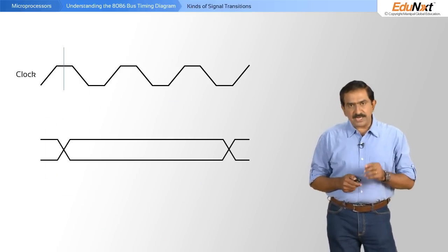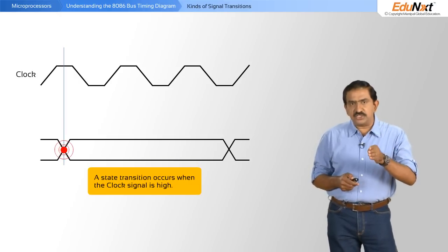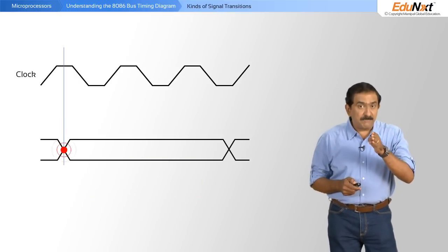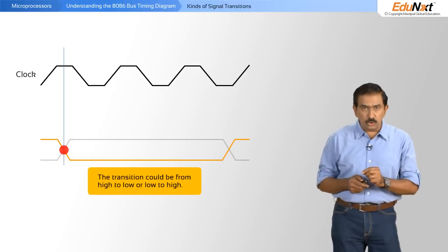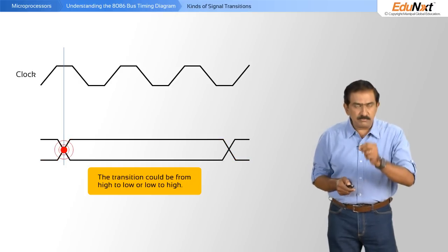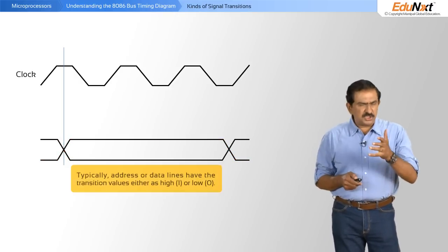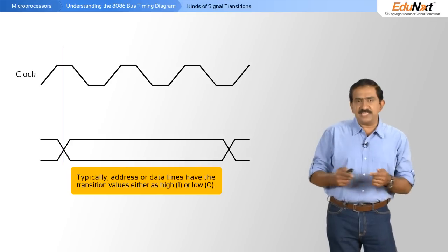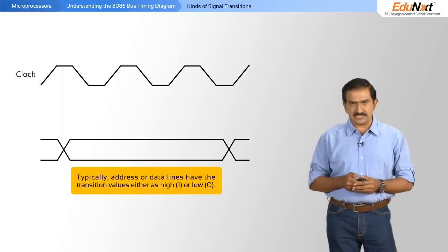In this example, a state transition occurs when the clock signal is high, but the transition could be from a high to a low or a low to a high. This is typical of address lines and data lines where every time you could have a high or a low on those two kinds of buses.